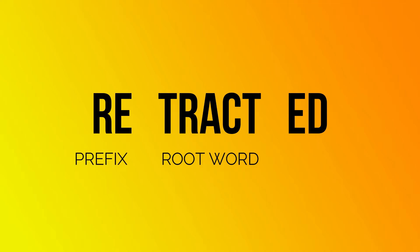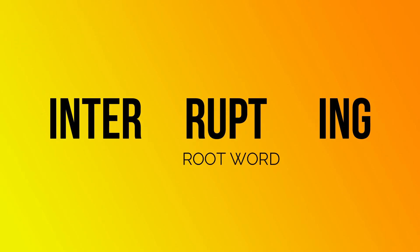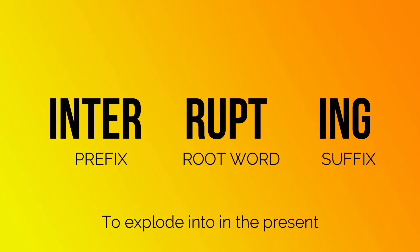So if we put the prefix 're' at the beginning and 'ed' at the end, we have 'to do again, move in the past tense' — so we have moved something in the past. Let's try another root word example. We have our root word 'rupt,' which means to explode or go up, but it doesn't have a meaningful definition without a prefix or a suffix. So we put 'inter' as our prefix and 'ing' as our suffix. 'Inter' means to go into. So to explode into something in the present tense.